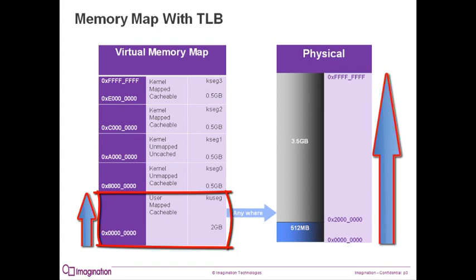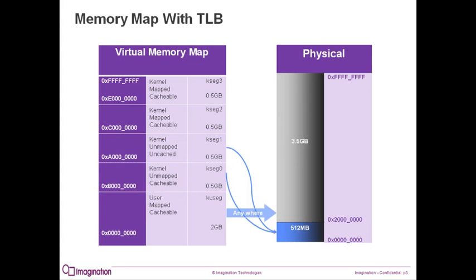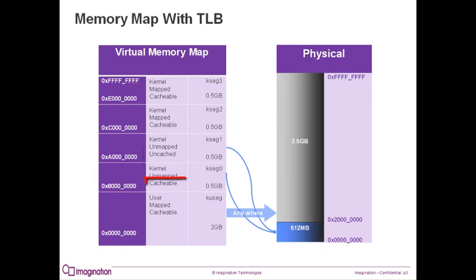This segment can be accessed in kernel or user mode. The next two sections, KSEG0 and KSEG1, are designed to be used for the OS code and data. These segments can only be accessed in kernel mode. They are both directly translated to the same lower 512 MB of memory. For example, address 80000000 and address A0000000 are both directly mapped to physical address 0. The difference is KSEG0 addresses are cacheable, to be used once the cache has been initialized. KSEG1 addresses are not cached, to be used at boot time and for memory mapped IO.